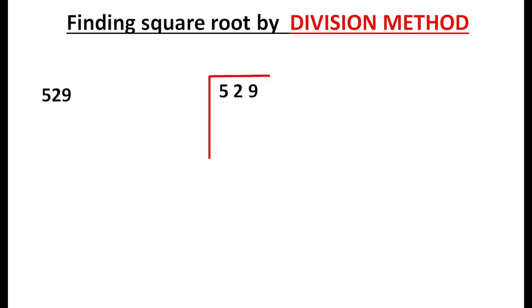We are going to find the square root of 529 using the division method. We have to pair up the digits into groups of two from right to left — one splice of two numbers. So we have two groups here: 5 and 29.